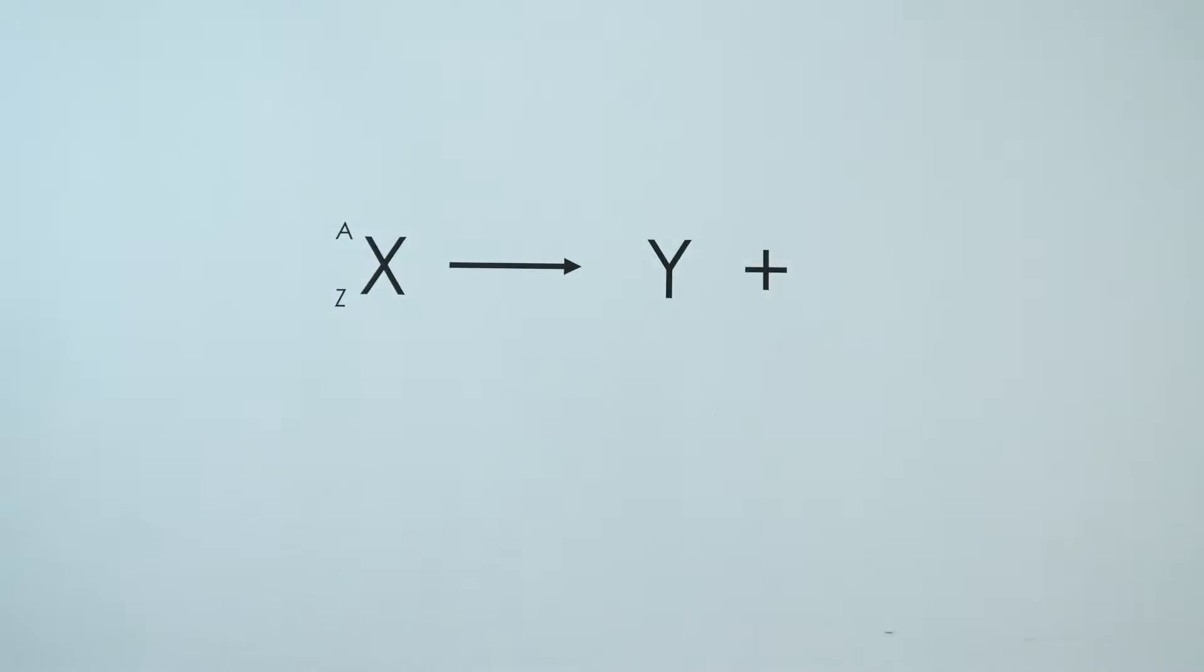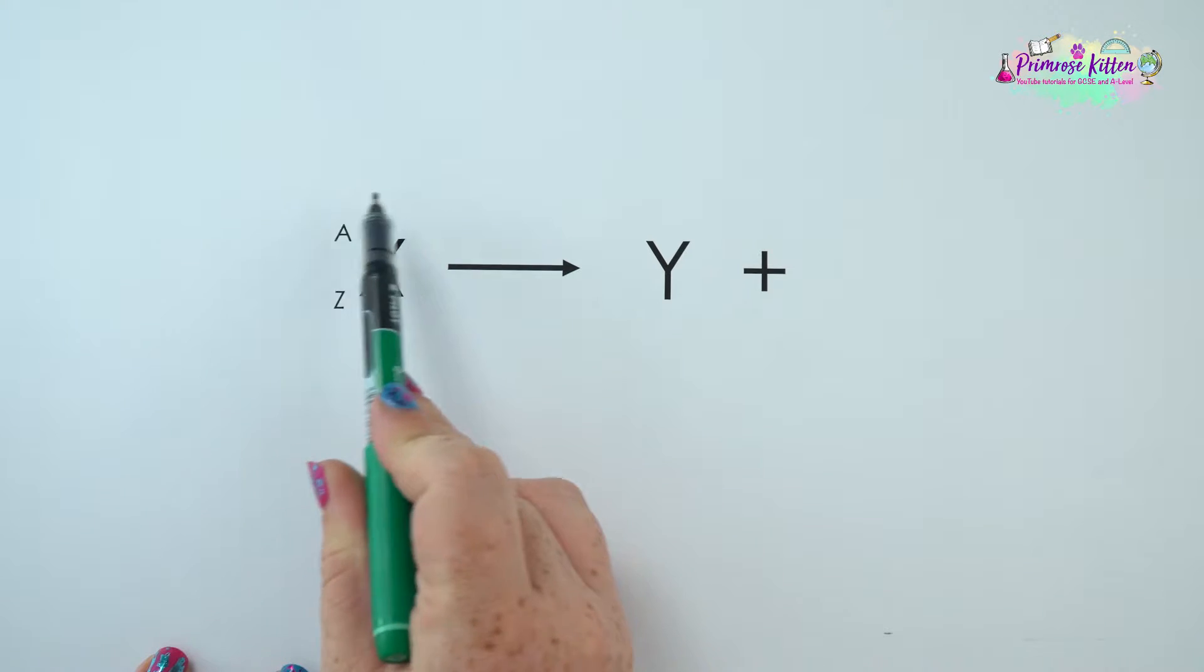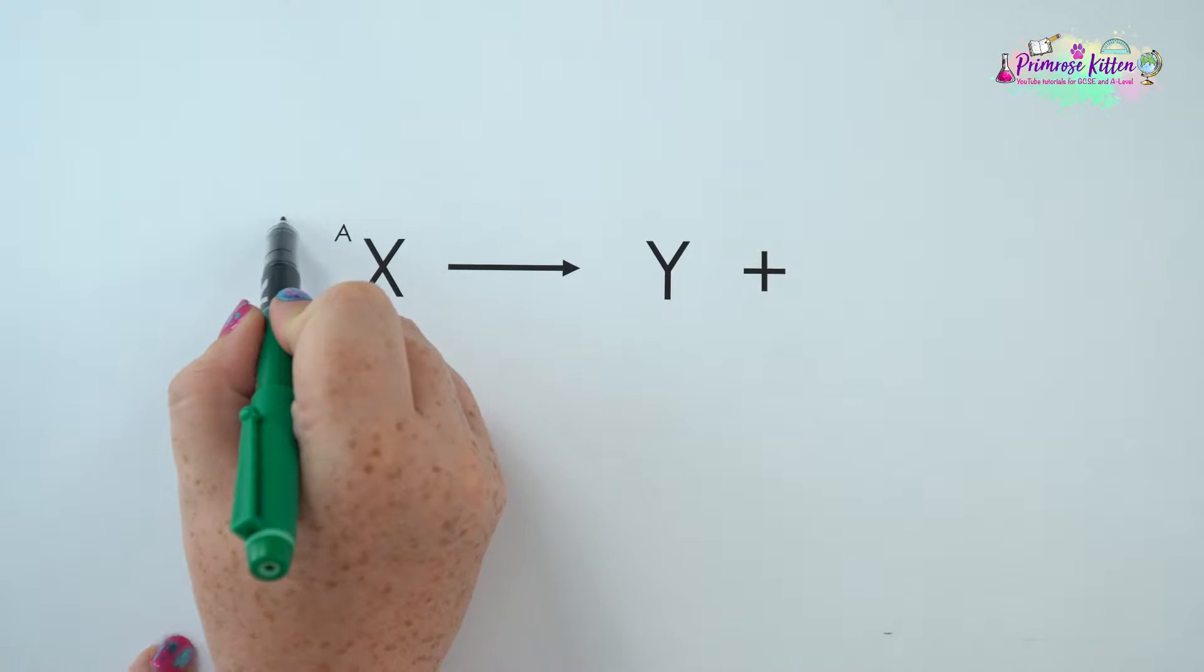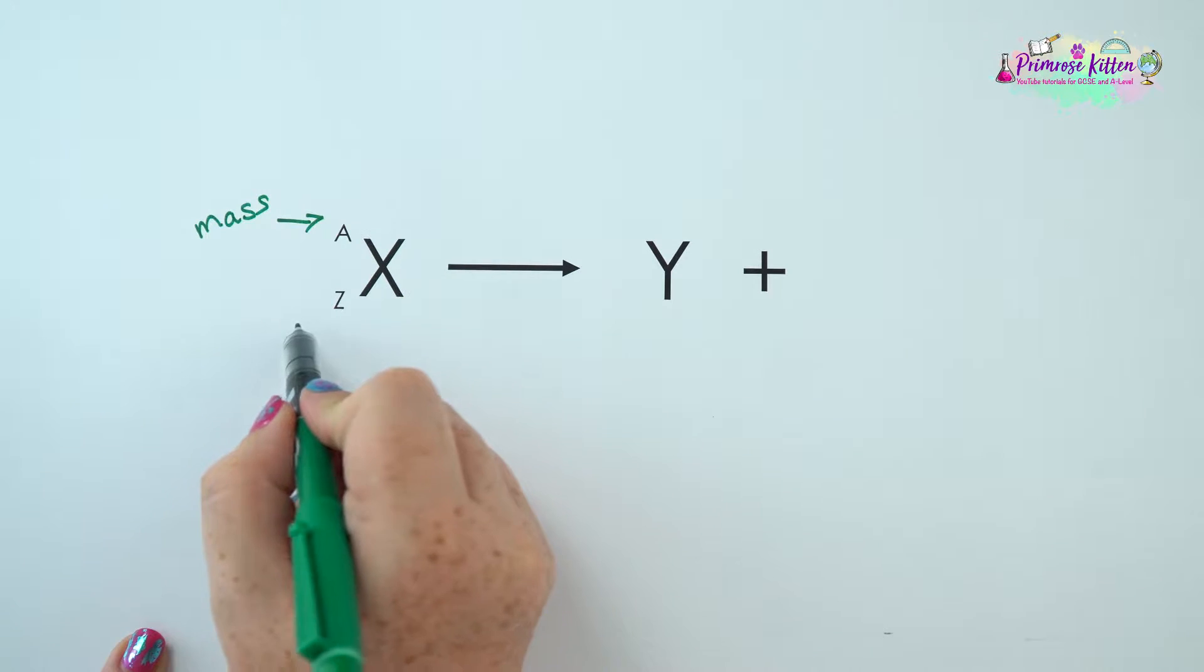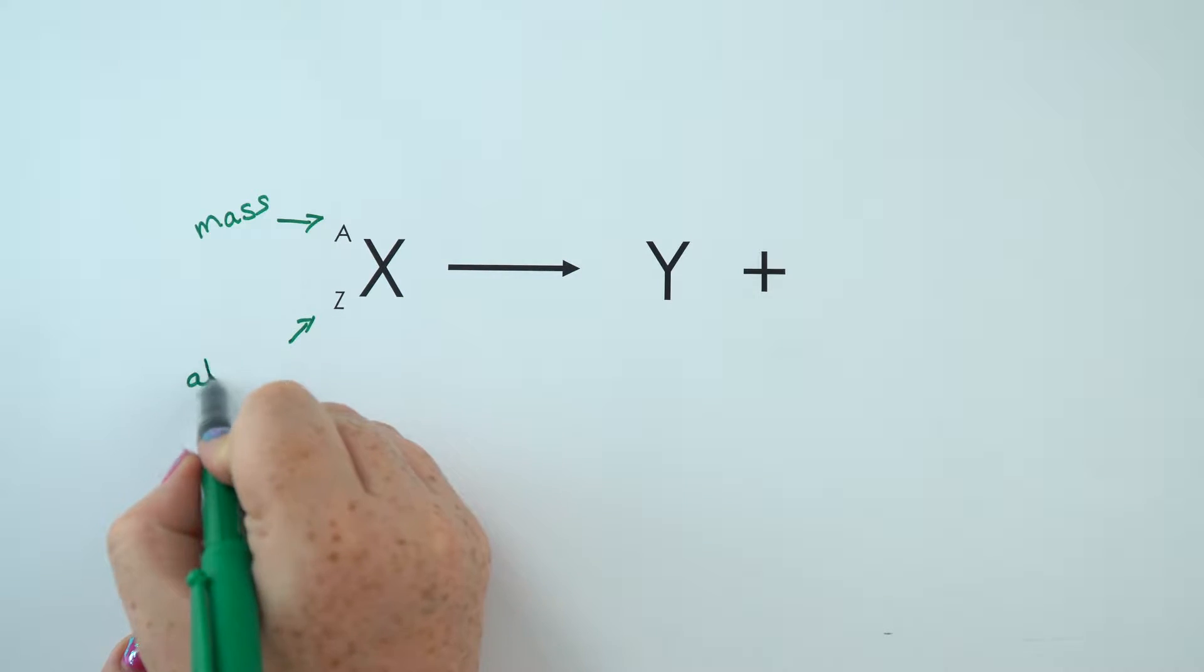There's a way that we can represent this using the standard scientific notation. If we're looking at our representation of an atom here, the number at the top is the mass number and the number at the bottom is the atomic number.